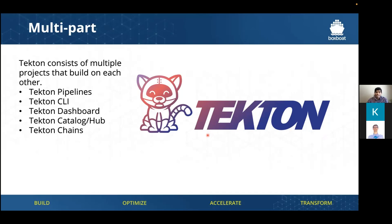The first thing is Tekton Pipelines. This is basically the CI/CD system that you build your pipeline with. It consists of tasks, task runs, pipelines, pipeline runs, and a lot of other things. I'll give you an example of exactly what a task and a pipeline look like in the coming slides.